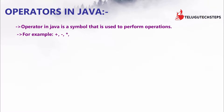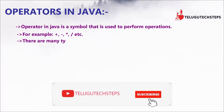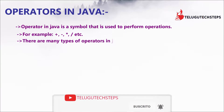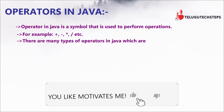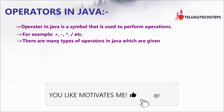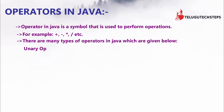For example: plus, minus, subtraction, multiplication, modulation — we can use these symbols in Java. In Java, there are many types of operators.